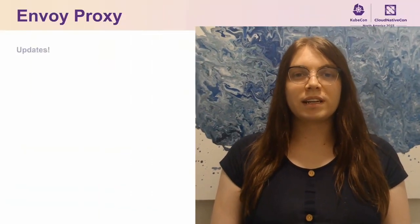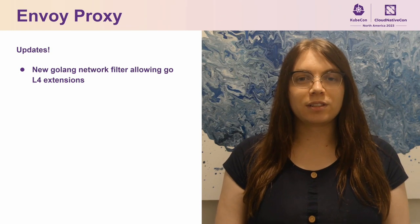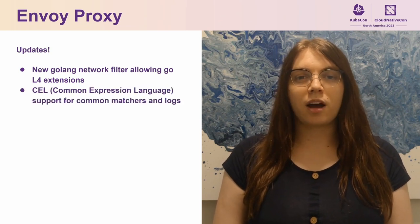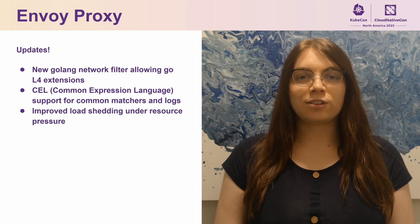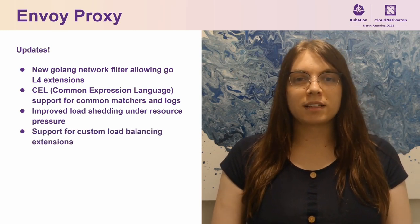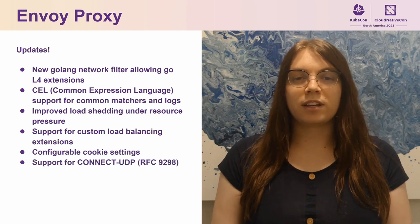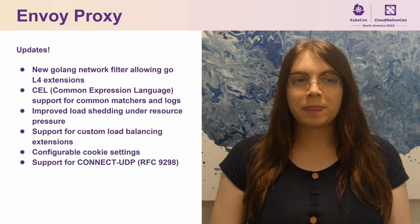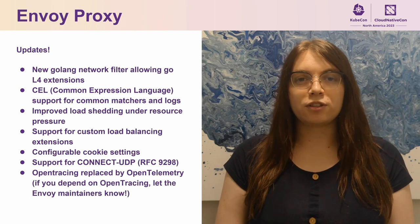Hi, here's some updates from the Envoy project. Envoy proxy now has a Go Link network filter that allows for layer 4 extensions. CEL support has been added for common matches and logs. There is now improved load shedding under resource pressure, support for custom load balancing extensions, custom cookie settings, and support for CONNECT-UDP. Open tracing has now been fully replaced by OpenTelemetry.